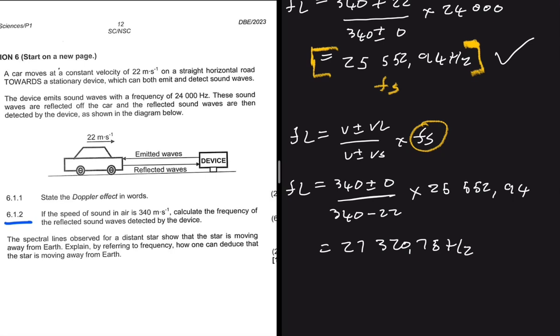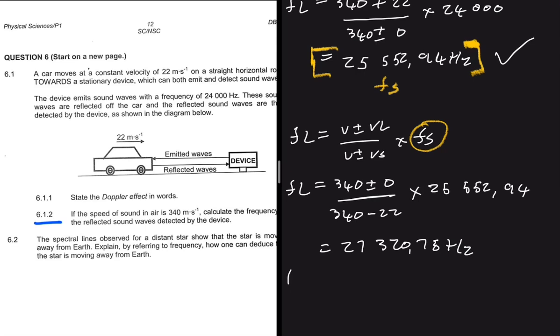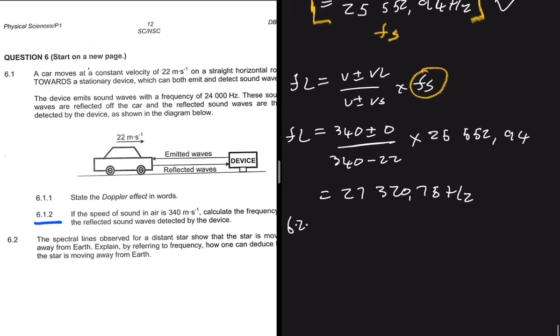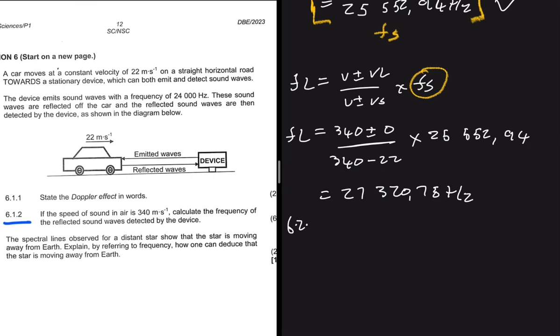The last question, 6.2, says the spectral lines observed for a distant star showed that the star is moving away from Earth. Explain by referring to frequency how one can deduce that the star is moving away from the Earth.